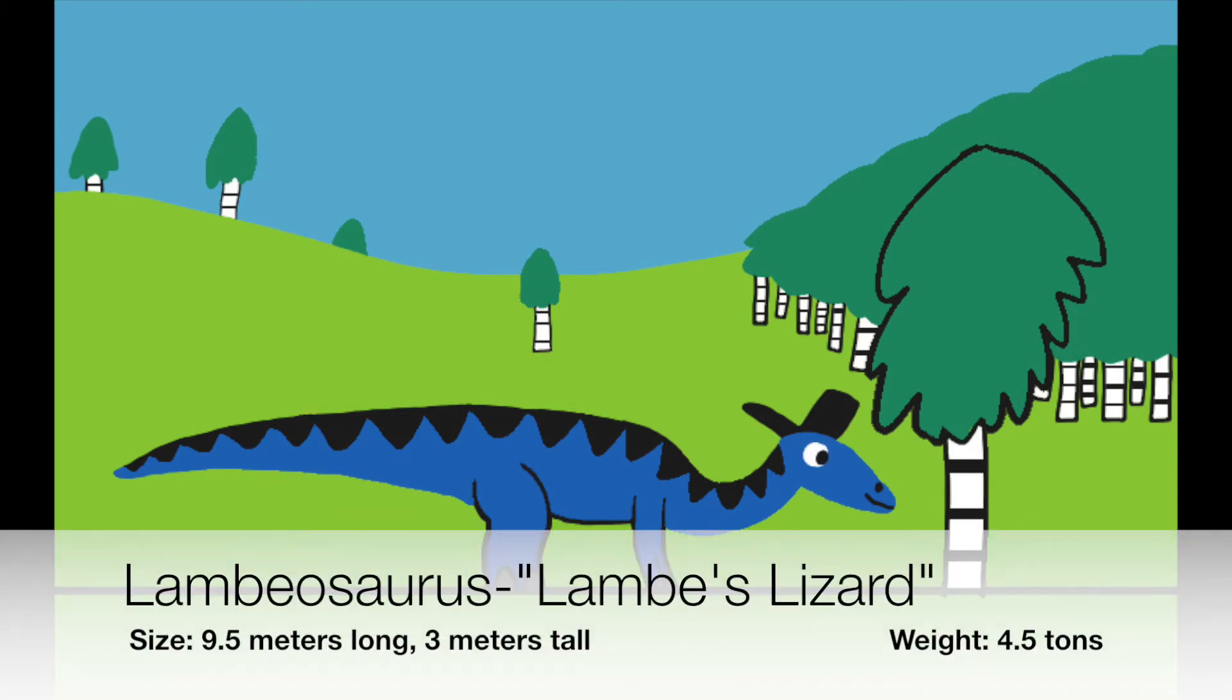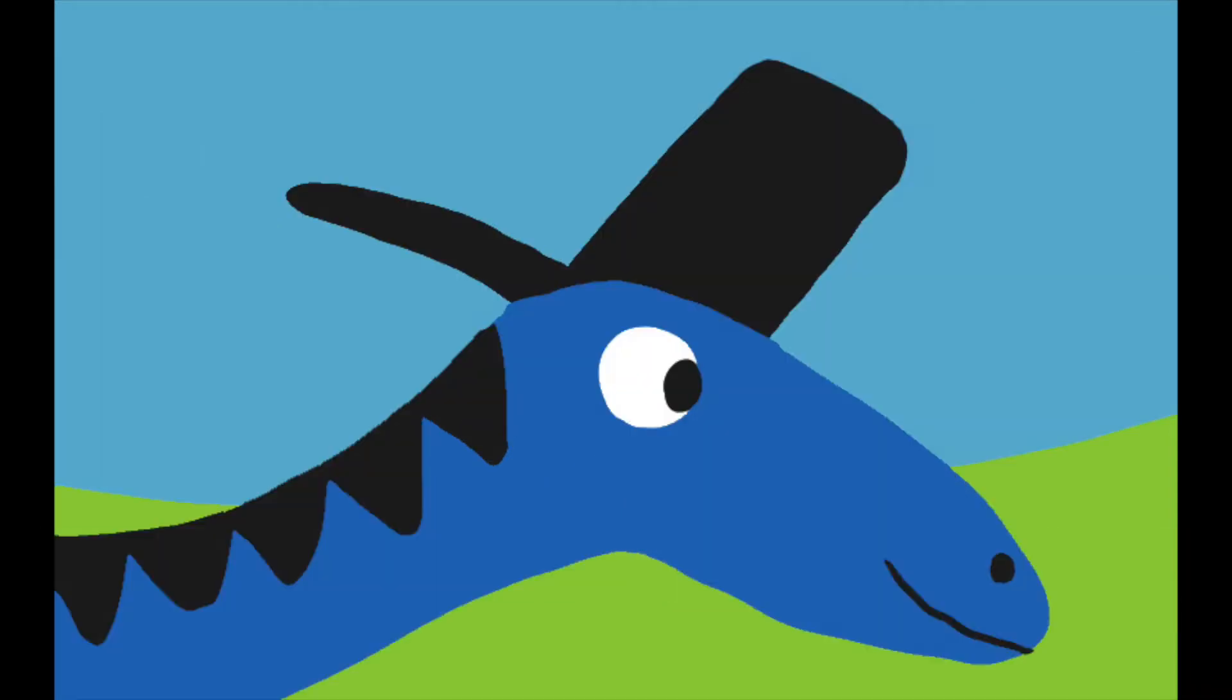Lambiosaurus is another popular member of the Hadrosaurids. He's distinguished by his two unique head crests. He has a tall rectangular crest that's hollow and has a backward-pointing bony spike that's solid.